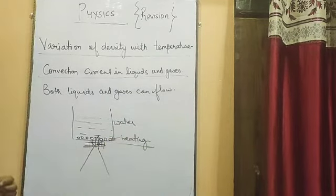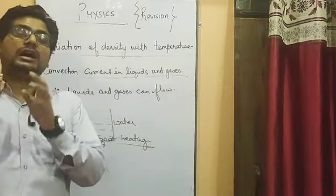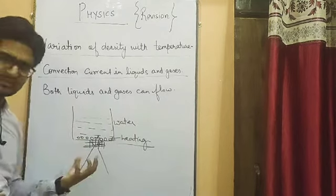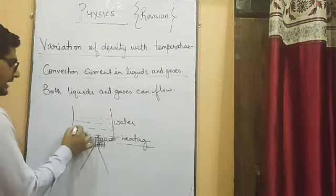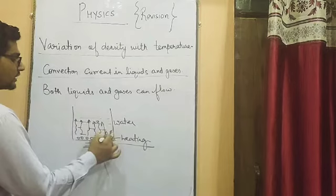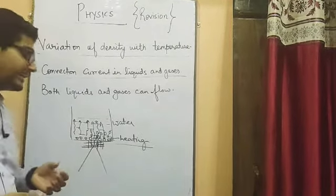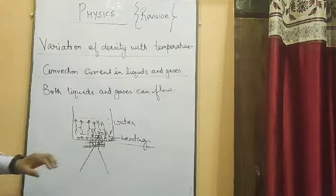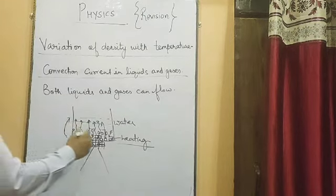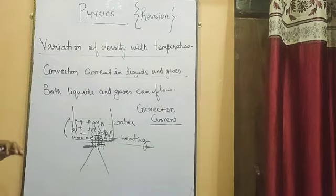As we studied earlier, when you heat a liquid the molecules move apart, the density decreases, and the heated water becomes lighter. These lighter warm water molecules rise up. The cold water molecules then come and settle at the bottom. When they settle at the bottom they also get heated quickly, expand, and rise up again. This circular movement — liquid moving upward and cold liquid replacing it — is known as a convection current.